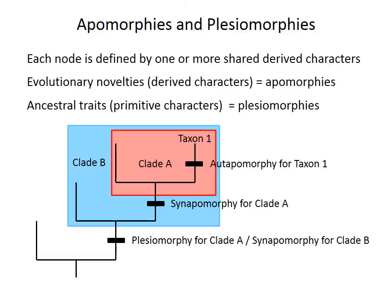In class, you will practice making cladograms from data matrices, interpreting evolutionary relationships, and identifying monophyletic, paraphyletic, and polyphyletic groups. You will also practice recognizing apomorphies and plesiomorphies on phylogenetic trees.